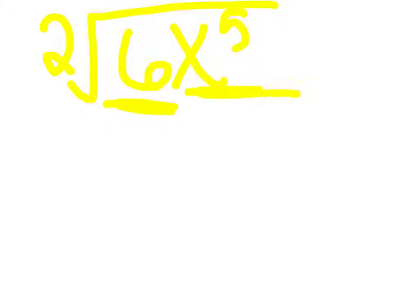Do you see the 5 right here? You can simplify that one. You can simplify it to 2x squared times the square root of 6x, and that's your answer.